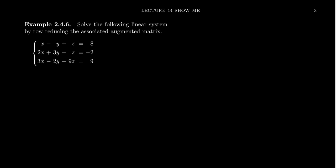I want to solve this system using the technique of Gauss-Jordan elimination. The first step is to rewrite our linear system as an augmented matrix where each variable becomes a column and each equation becomes a row. The first equation becomes 1, -1, 1 augment 8. The second equation becomes 2, 3, -1, -2. The third equation becomes 3, -2, -9, and 9.